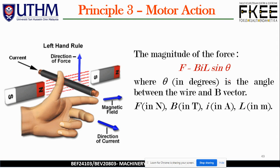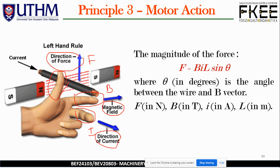Back to the left-hand rule. We have three fingers representing each element: F for the direction of force, B for the magnetic field, and I for the direction of current. Using the magnetic bar with north and south poles, current flows from N to S. The cable carrying the current runs in this direction, and the direction of force is upward.